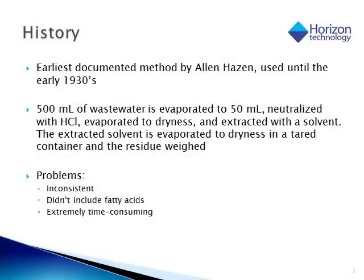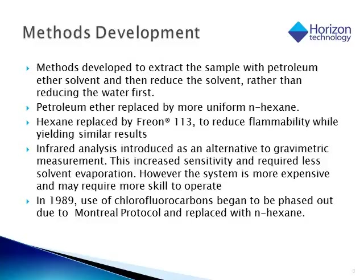Let's talk about some of the history and the methods developed to do this measurement. The earliest documented method was in the early 1930s: 500 milliliters of wastewater was evaporated to 50 milliliters, neutralized with HCl, evaporated to dryness, and extracted with a solvent — they dried the wastewater first before doing the extraction. This was inconsistent, didn't include fatty acids, and was extremely time-consuming. Methods were then developed to extract the sample with petroleum ether solvent and reduce the solvent rather than reducing the water first, which was certainly a time-saver.